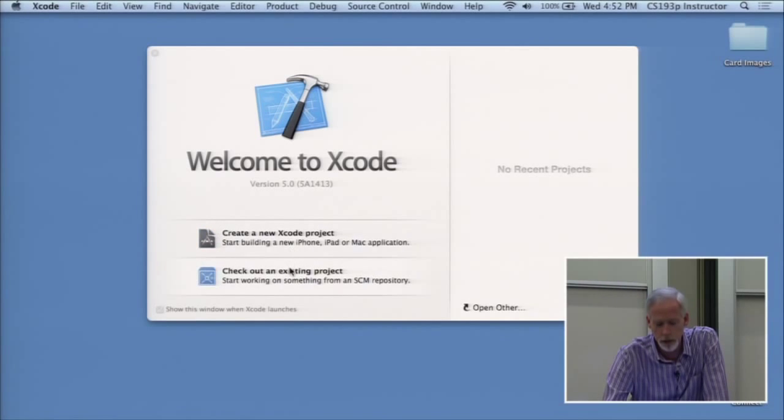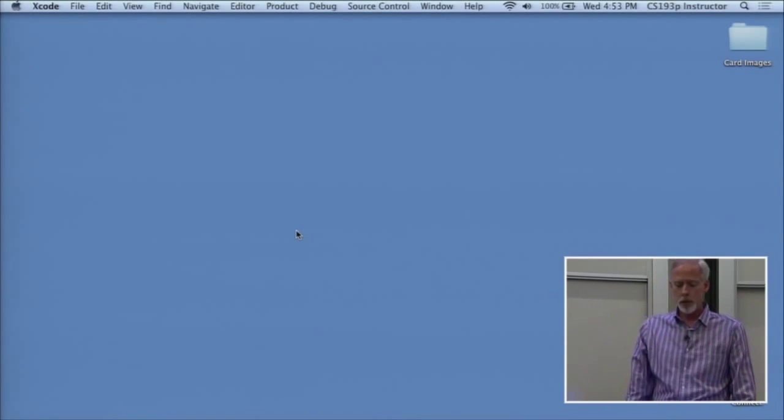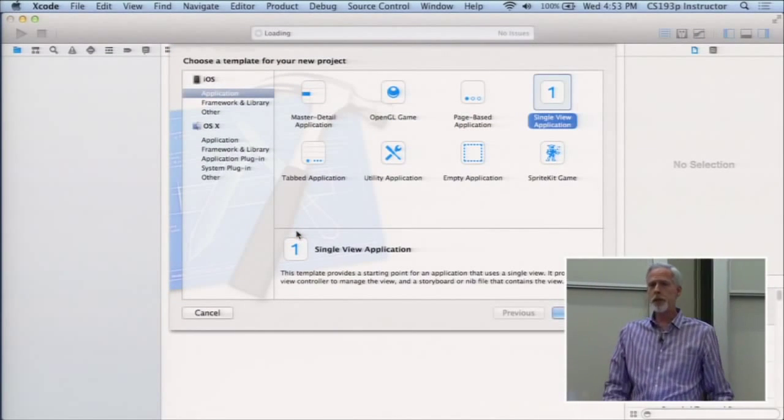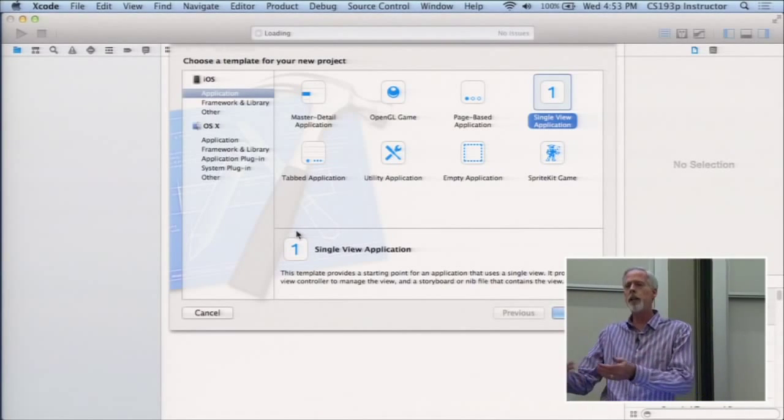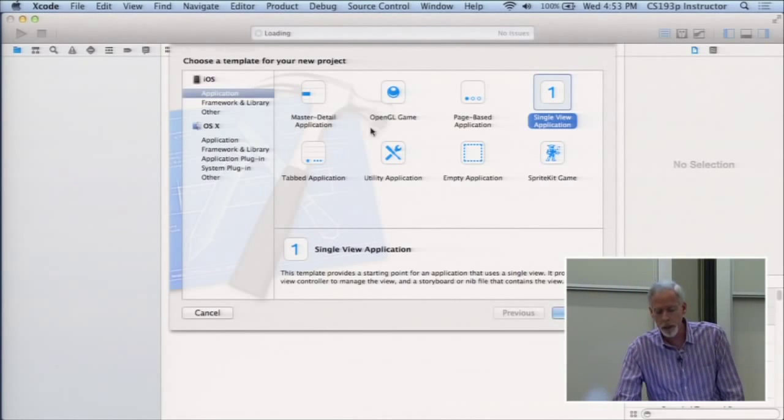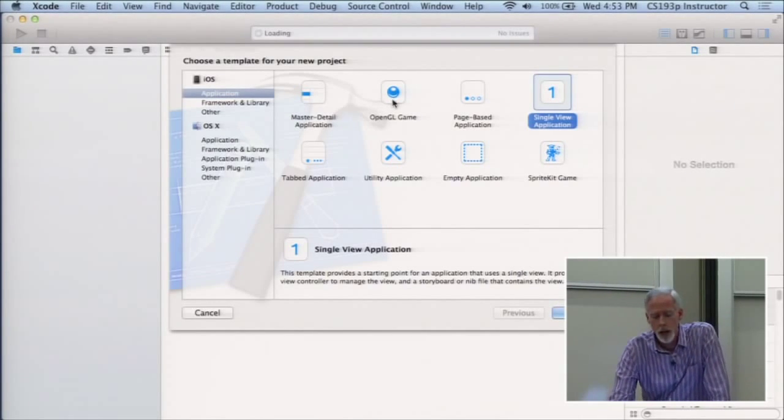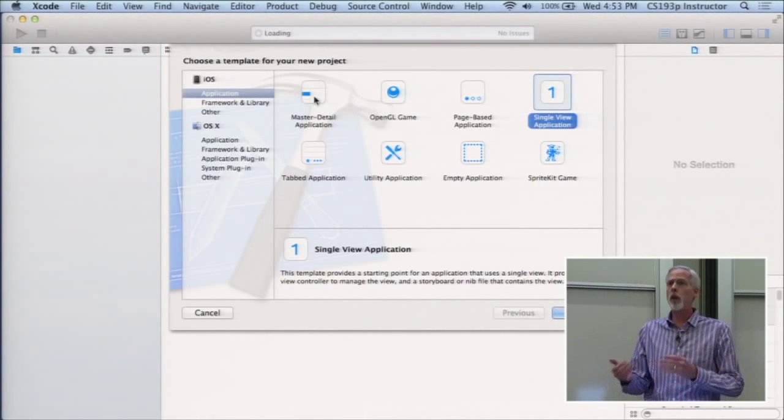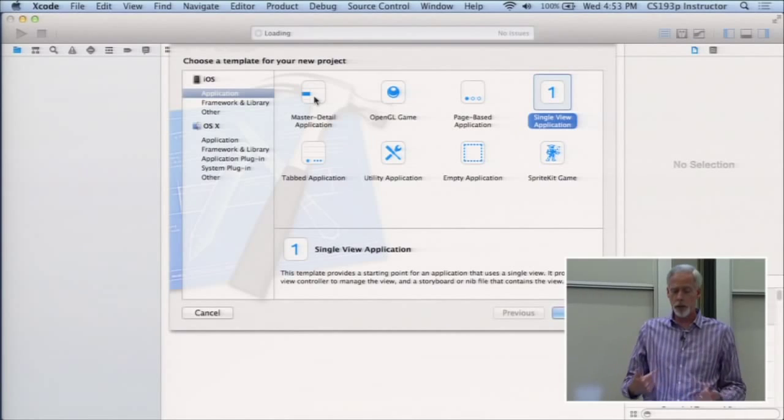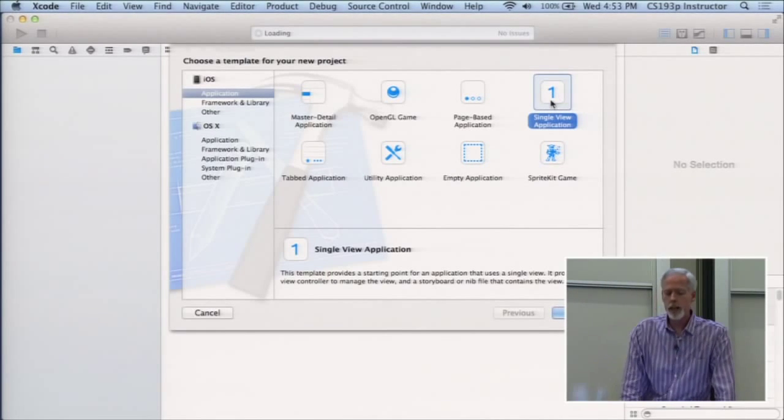And what we're going to do today is create a new project, so you can either check an existing project out of source control, or you can create a new one. And so we're going to create a new one. So when we create a new one, it wants to give us a little bit of help by offering to create a template for different kinds of applications, like an OpenGL game, it'll create some framework for that for you. Master detail applications, something we're going to do later in the quarter, although we're going to build all of the code ourselves, we're not going to use this template.